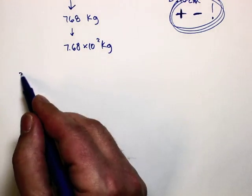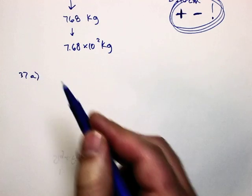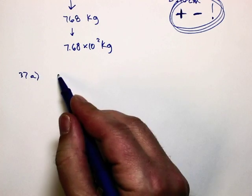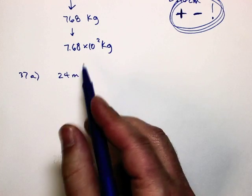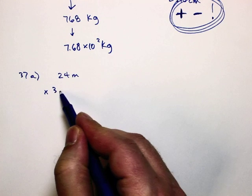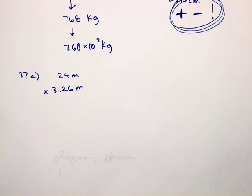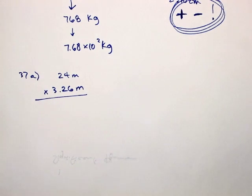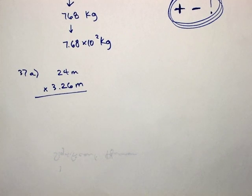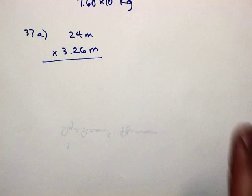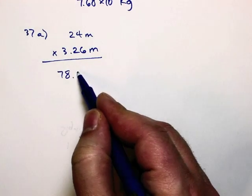So, let's do 37a together at the bottom of the page there. We have two quantities being multiplied. We have 24 meters times 3.26 meters. Hopefully you can see how important your calculators will become when you get math problems like this. So, we've got 24 times 3.26, and I'm getting 78.24.